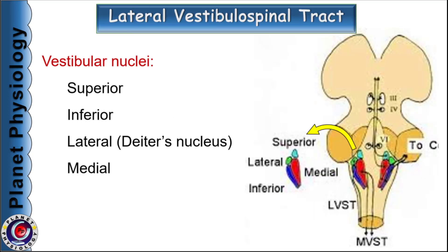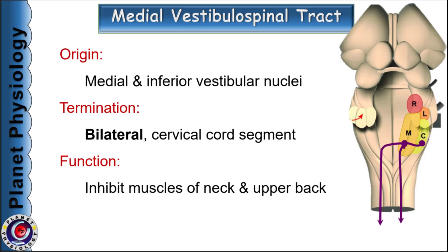Coming to the vestibulospinal tract: a complex of four vestibular nuclei is located at the junction of the medulla and pons, including superior, inferior, lateral and medial vestibular nuclei on either side. These nuclei, except the superior vestibular nucleus, give rise to medial and lateral vestibulospinal tracts. The medial vestibulospinal tract arises from medial and inferior vestibular nuclei. These fibers descend bilaterally — some without crossing, some after crossing — and terminate in medial group neurons mainly in the cervical cord segment. They directly synapse with alpha motor neurons and inhibit muscles of the neck and upper back.